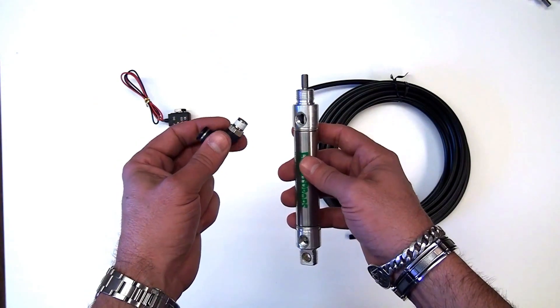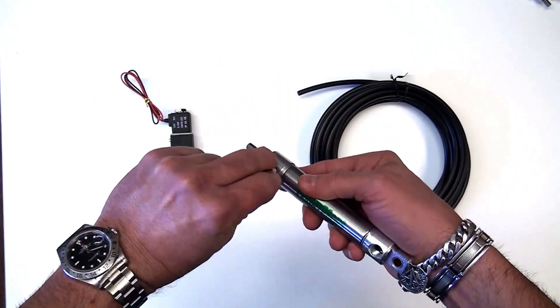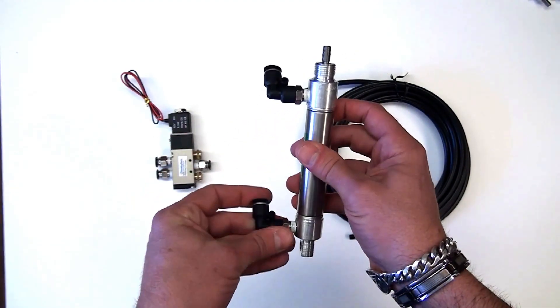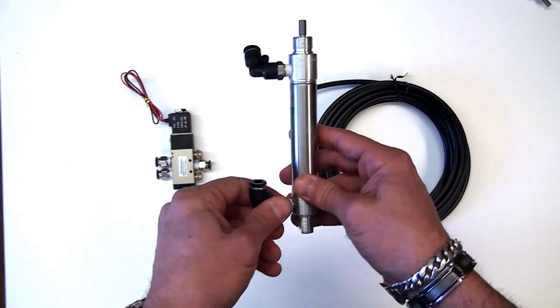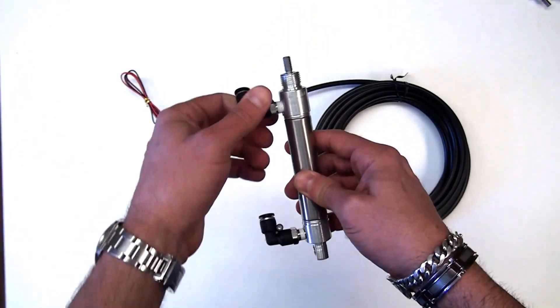You'll take the elbow fittings and put them into the double-acting cylinder. Now I'm just hand-tightening these, but obviously you'll need to use a wrench to tighten them down, or you'll have air leaks.